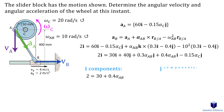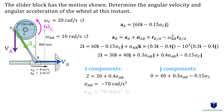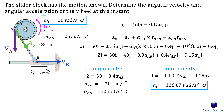Solving the two equations gives our answer. We get a negative value for the angular acceleration of link AB, which means the acceleration is clockwise. Those are our answers. I hope this video helped and made things clear for you. Thanks for watching and best of luck with your studies.